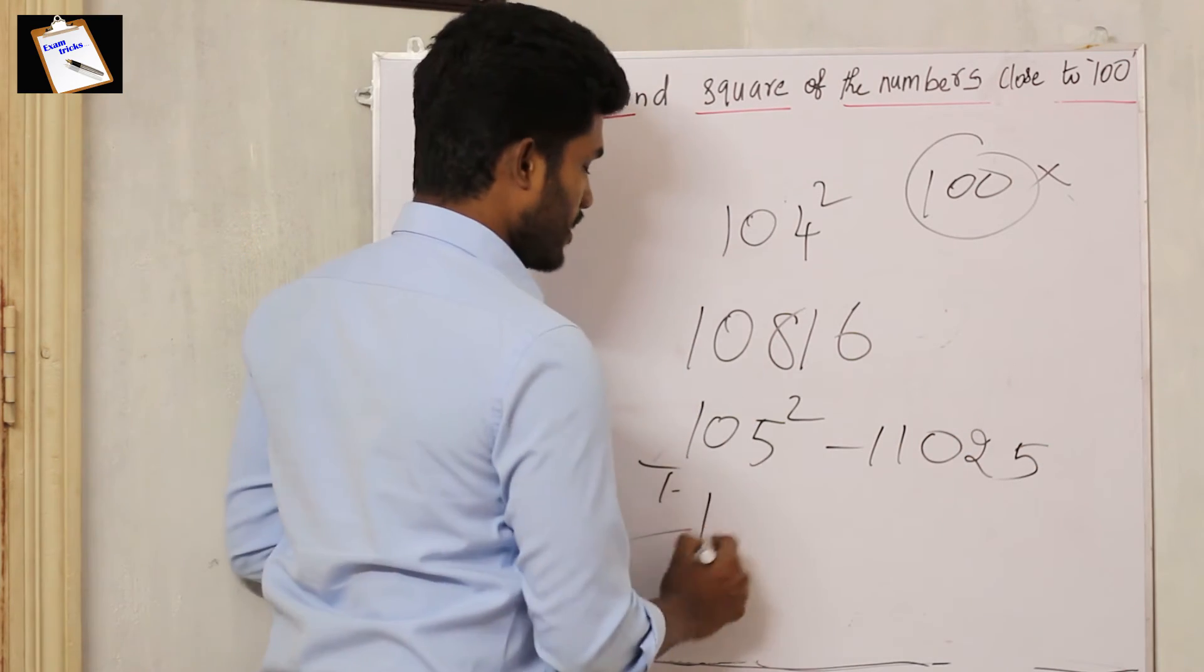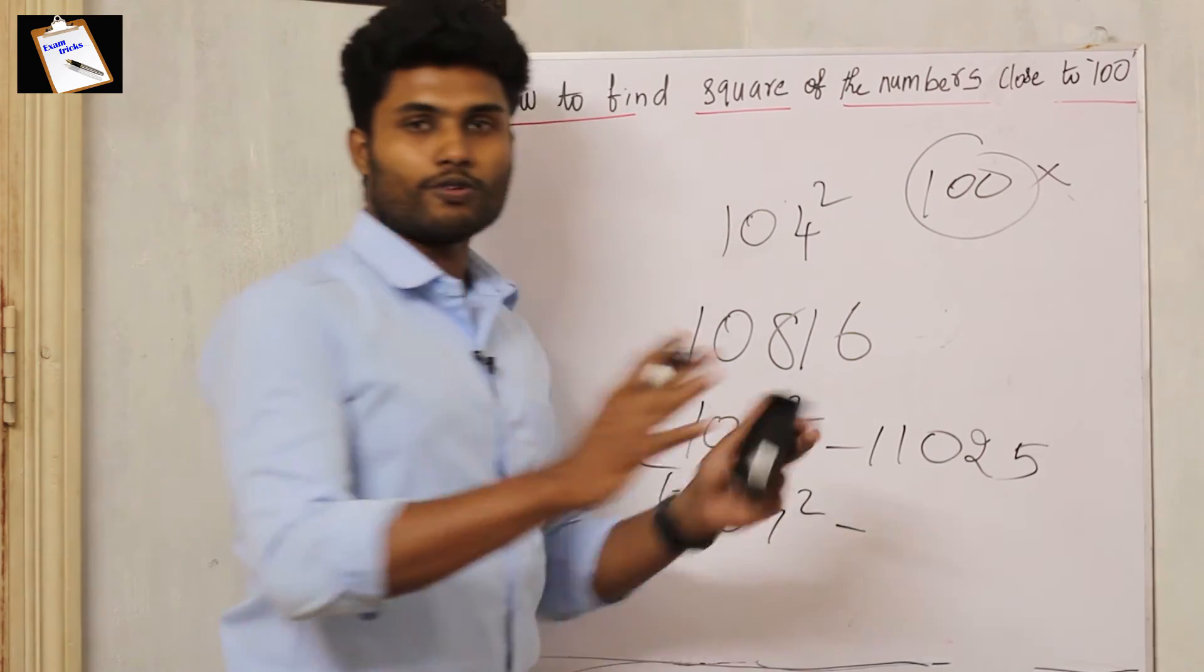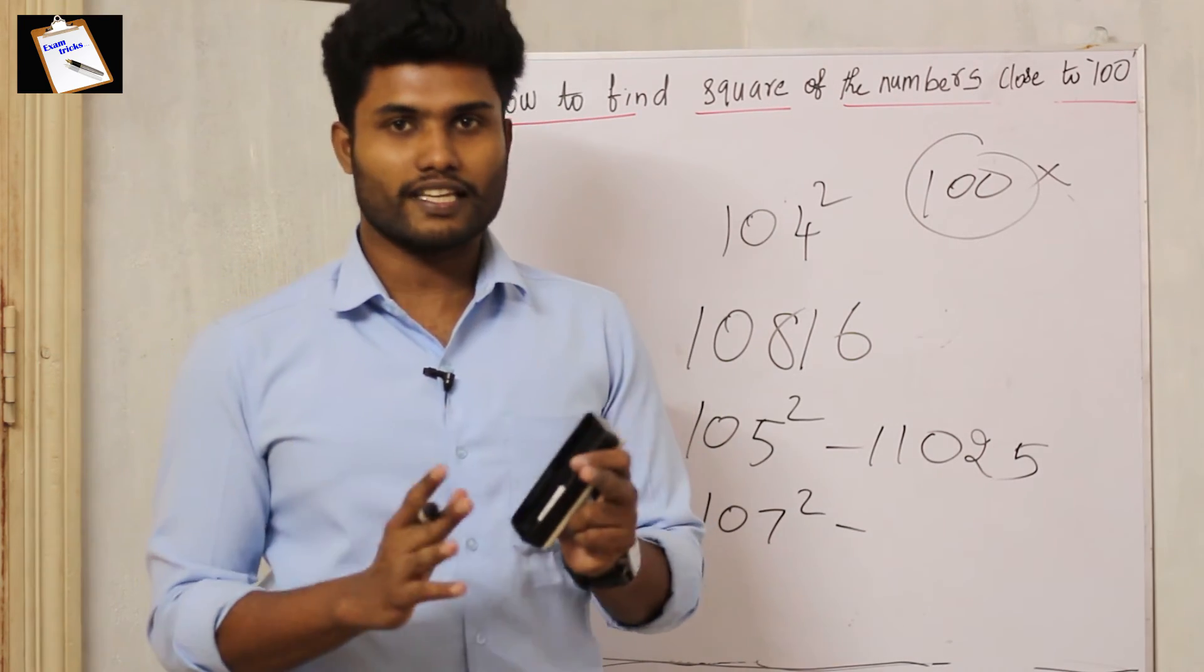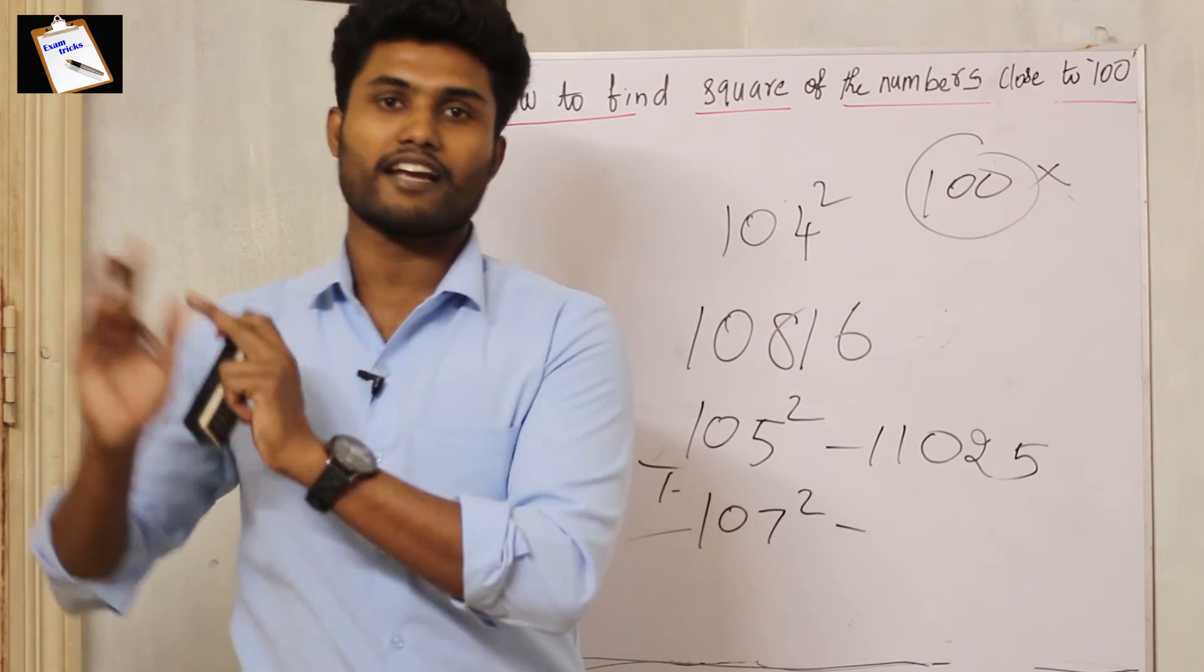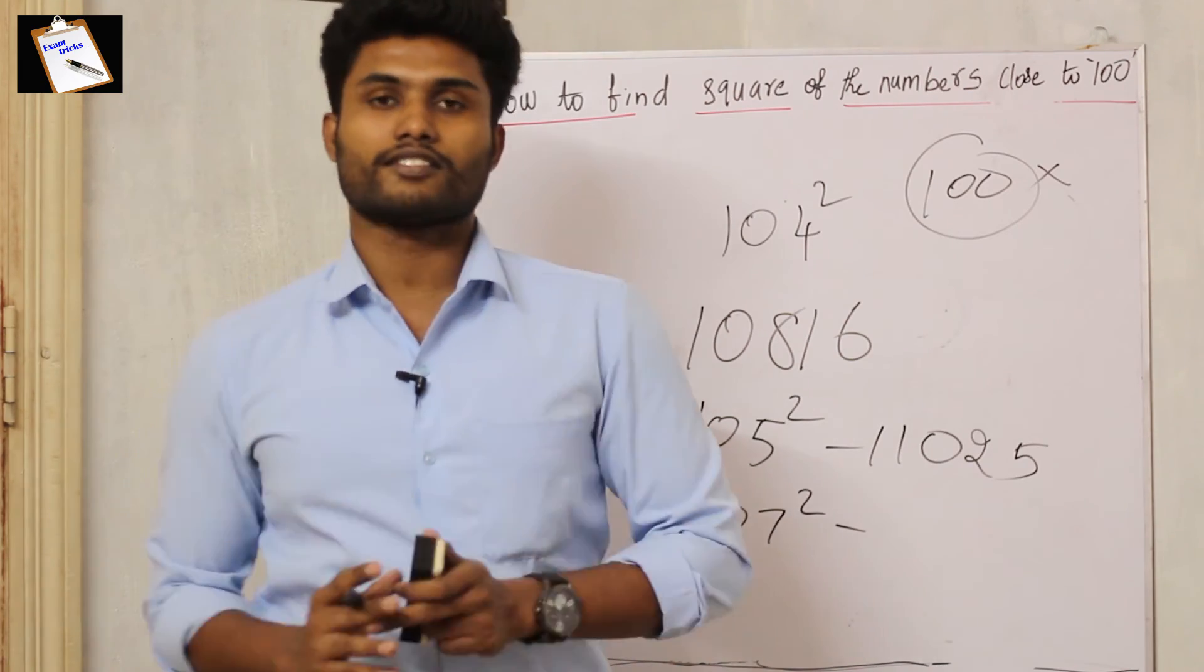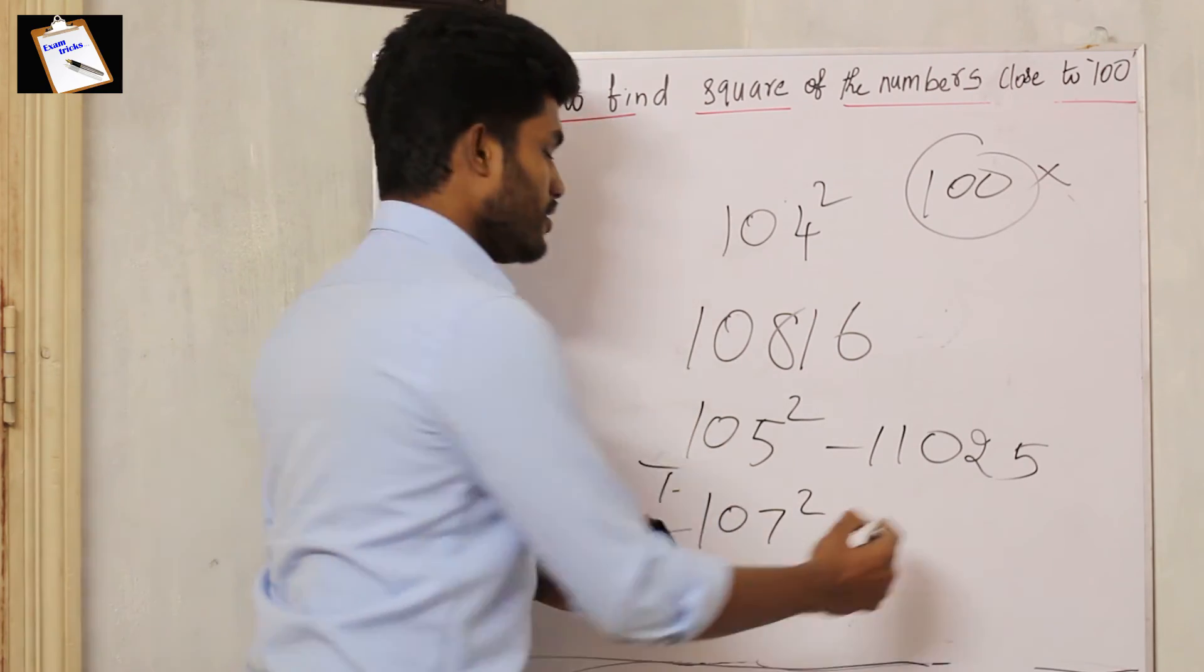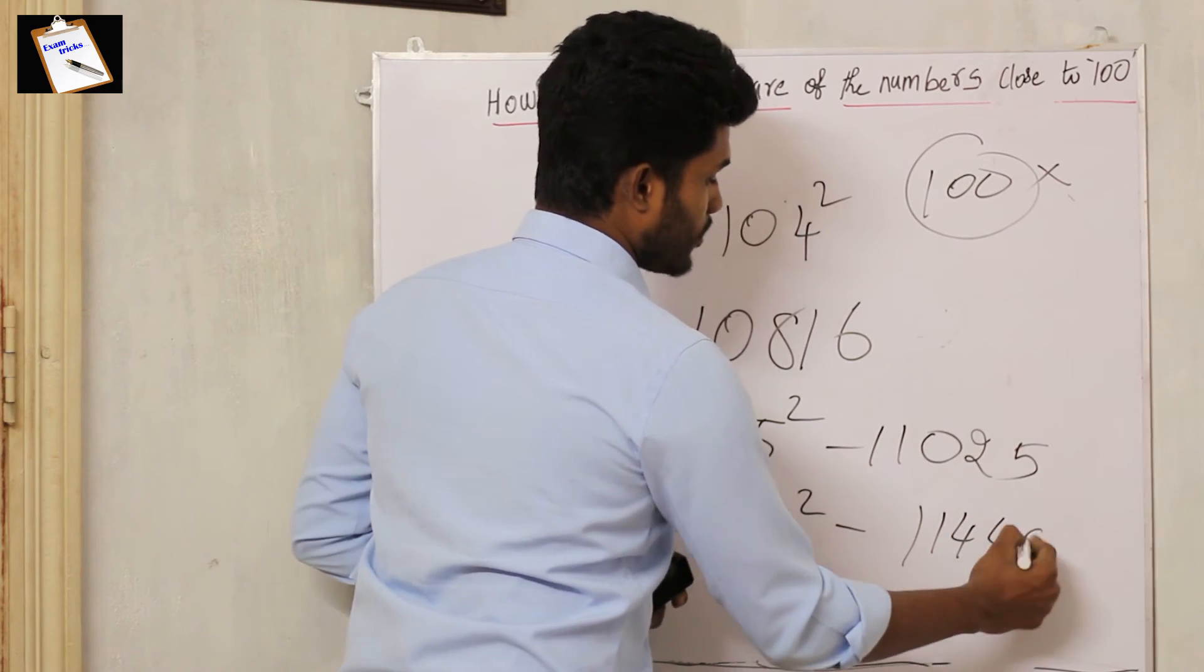One more number, let's see 107 square. Very easy. The difference is 7. 107 plus 7 is 114. Then what is 7 square? 7 square is 49. So the answer is 11449. See, this number maximum appears in compound interest topics.